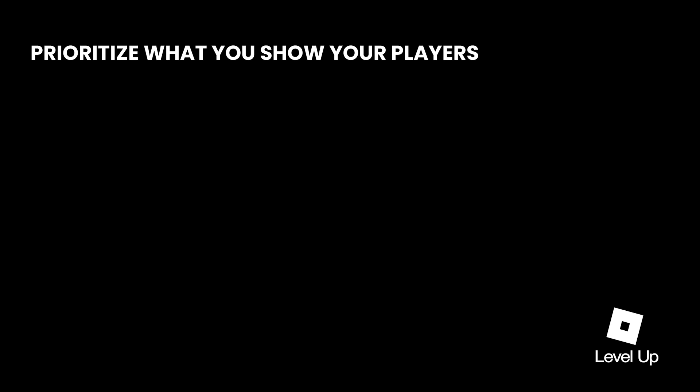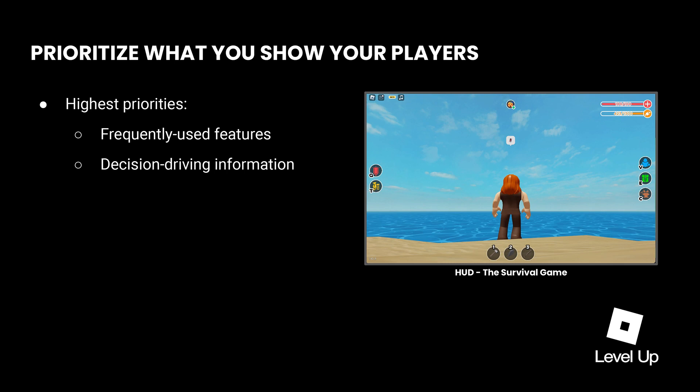User interface design is all about communicating with the player. And in any form of communication, it's important to prioritize the information that you share. This is especially true in games, where players have to make split-second decisions and may be playing on a tiny mobile screen that doesn't have a lot of room for clutter. The highest priorities for game UI are the features that players will access the most often and the information they need to make decisions in the moment. In a survival game, that means things like the player's map and crafting tools, as well as indicators for their health and hunger status — the things they need in order to keep surviving.